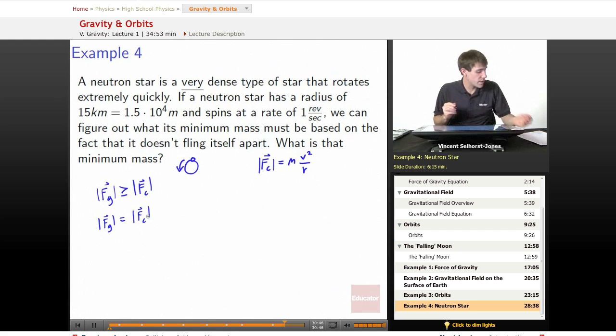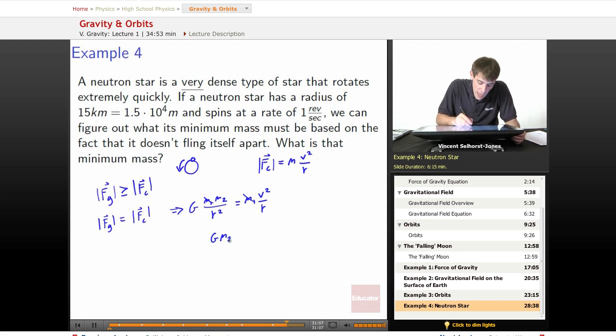So if the force of gravity is equal to the centripetal force, we're going to get that G m1 m2 over r squared equals that mass, the chunk on the surface, times v squared over r. So in this case, let's make that chunk on the surface m1 v squared over r. So m1s cancel out, and we get G m2 over r squared equals v squared over r.